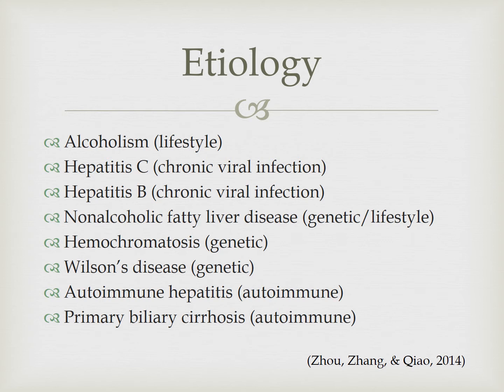Alcoholism is affected by lifestyle mostly — it's based on how much alcohol one consumes. Alcohol can become toxic and damage the cells in the liver. Hepatitis B and C are chronic viral infections, and the increased inflammation due to the immune response can cause liver damage.